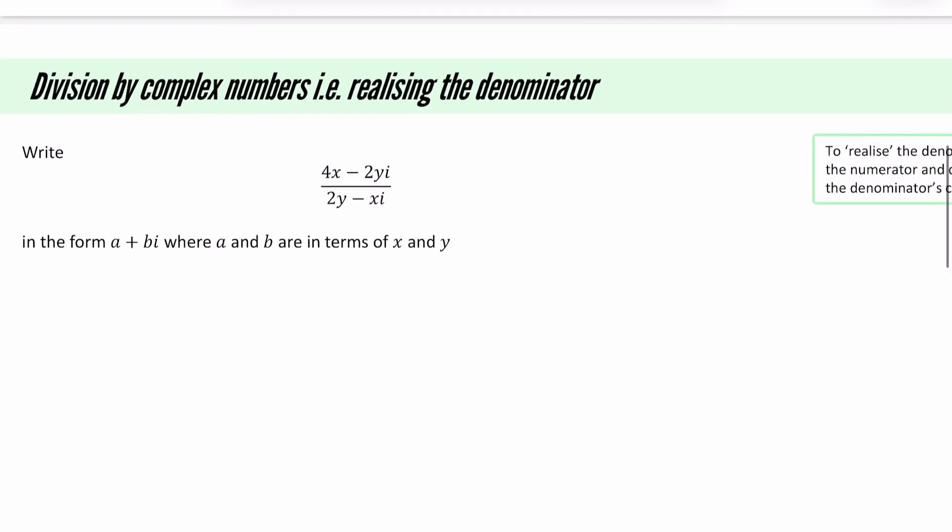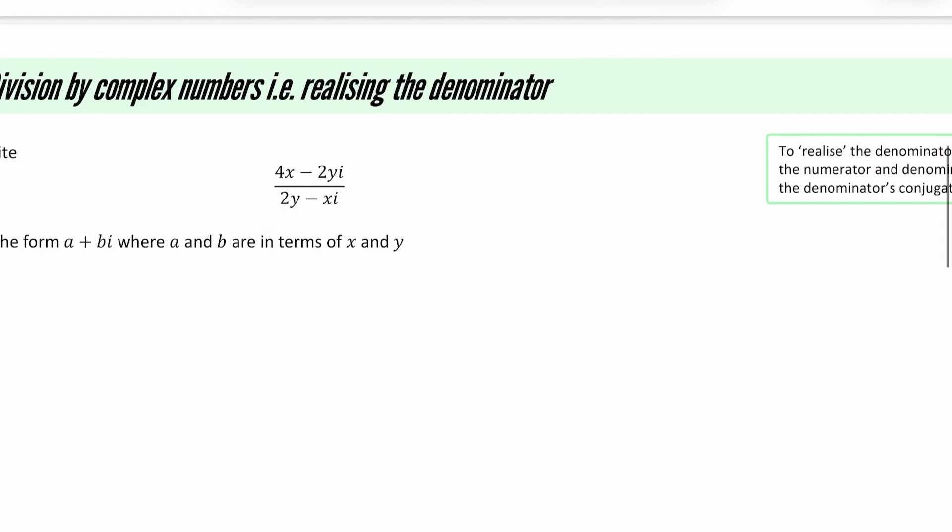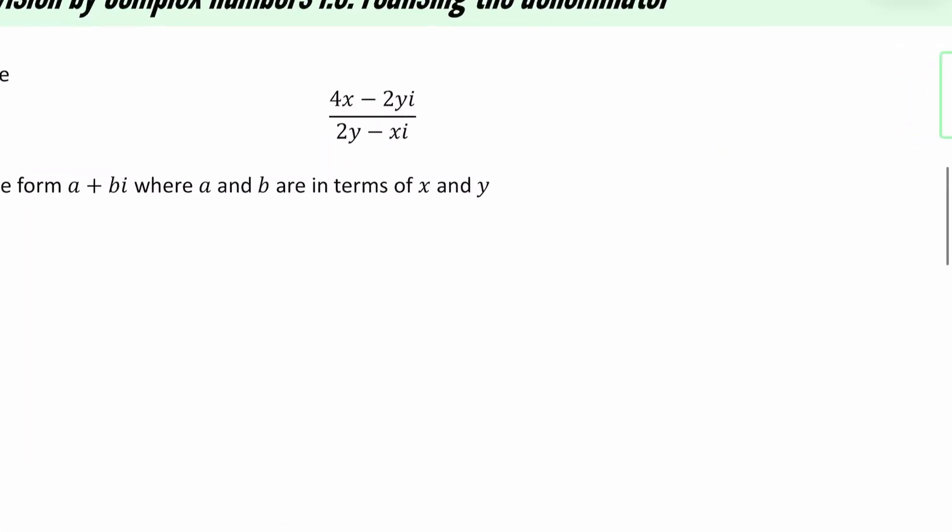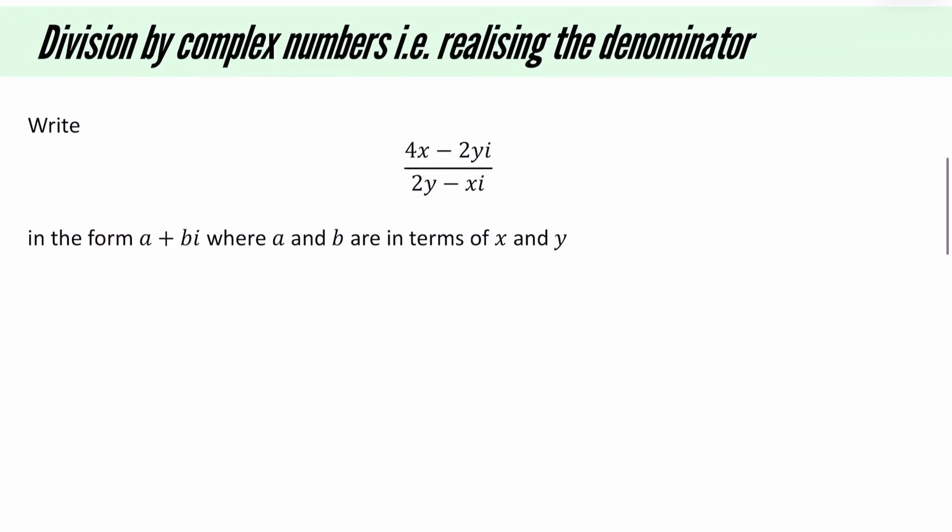We're now going to have a look at some division by complex numbers. In other words, what we call realising the denominator. So here we are taking two complex numbers, and we are dividing them, but what we're going to do is realise the denominator. To realise the denominator, all you do is you multiply the numerator and the denominator by the denominator's conjugate. So for this particular one that we've got here, we're going to try and write this in the form a plus bi, where a and b are in terms of x and y.